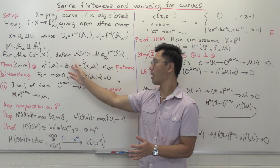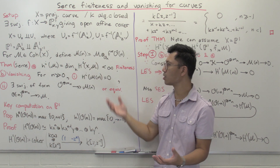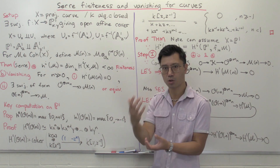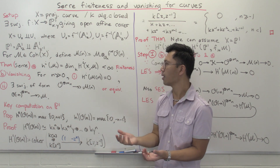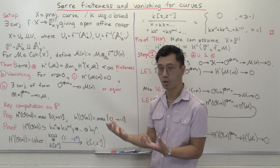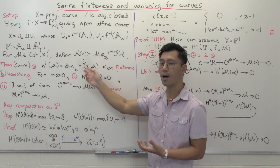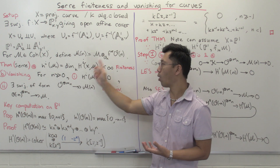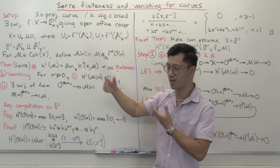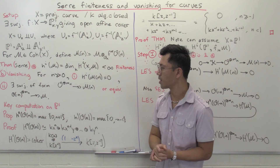That means that when you want to set up the theory, you can talk about this dimension and you know it's going to be some number that you can try to work out. You don't have to first prove it's finite and then work out what the number is. That's very important to make the theory work.